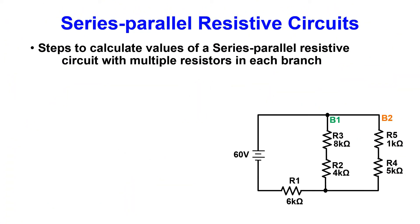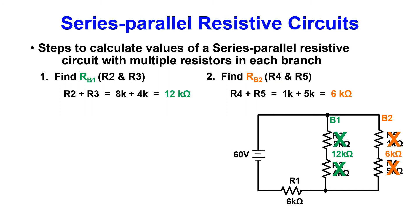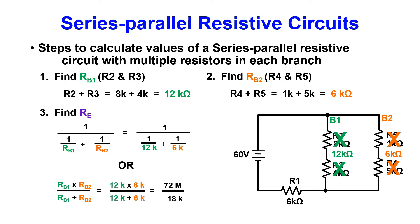Now to calculate values for a series parallel circuit with multiple resistors in each branch. First, we need to combine the resistors in each branch. Starting with branch 1, add R2 and R3 to get 12k, then branch 2 adding R4 and R5 to get 6k. We can then punch the resistance of branch 1 and the resistance of branch 2 into the reciprocal formula. This gives us 4k for our RE value.